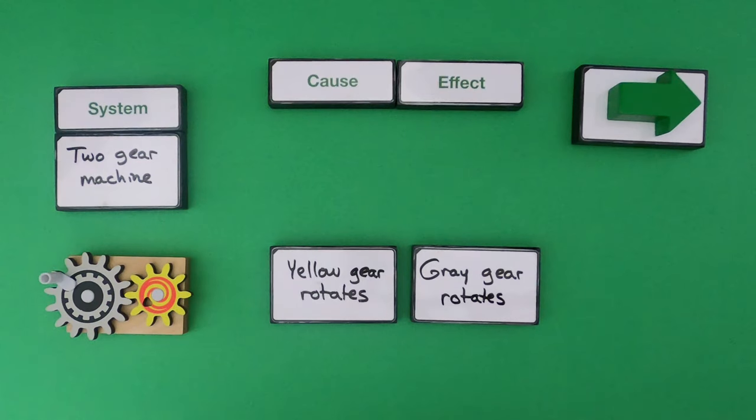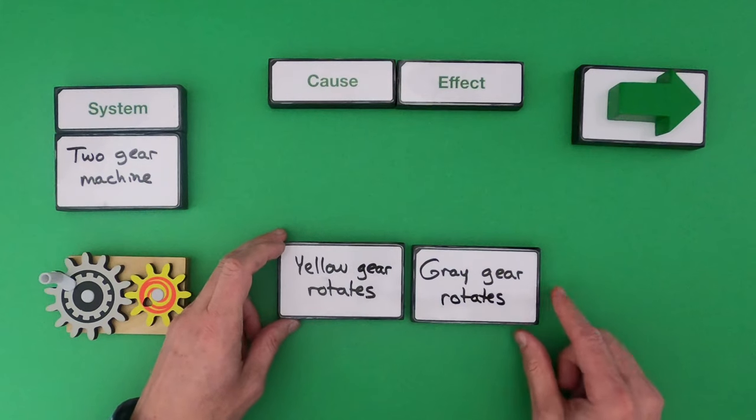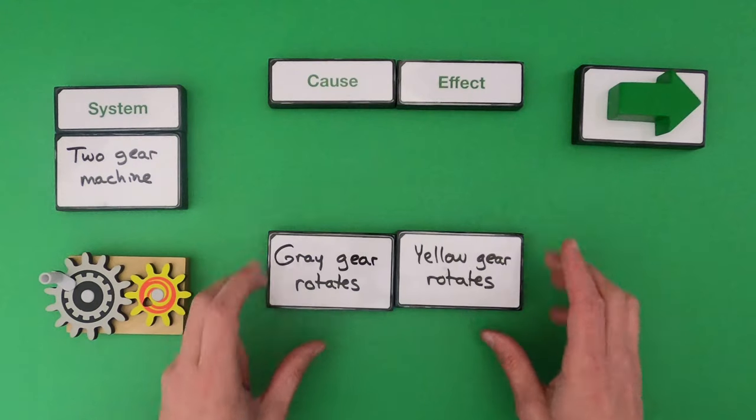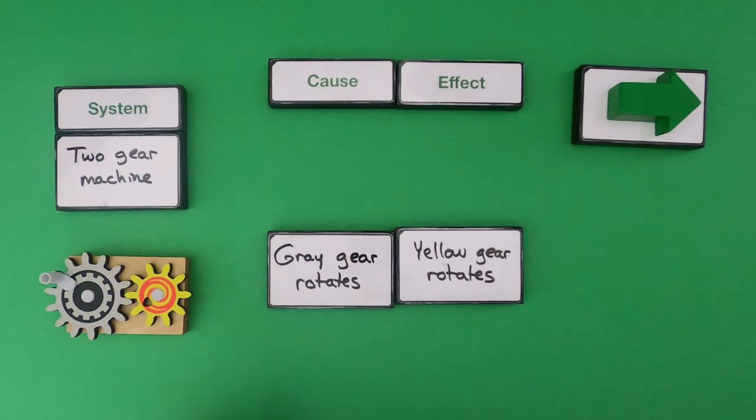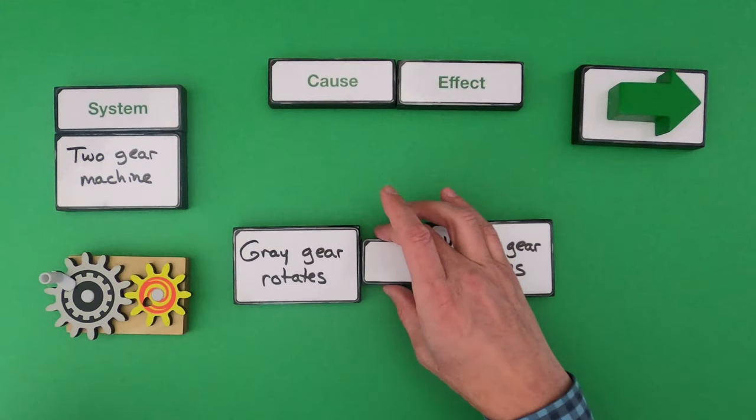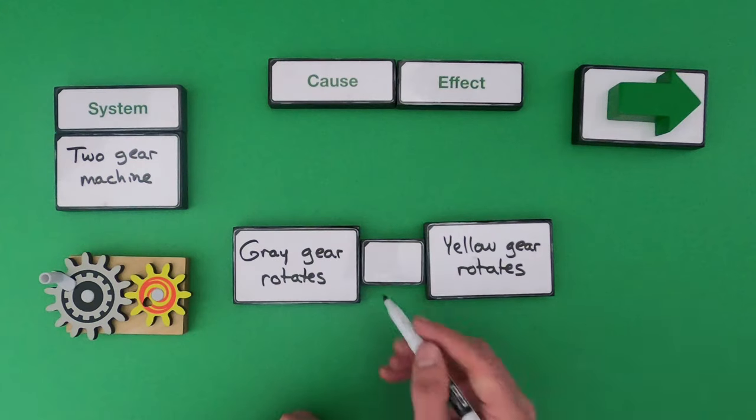And now we have to figure out what's the cause and what's the effect. In other words, what's the relationship between these two events? Does the yellow gear rotate and that causes the gray gear to rotate? Or does the gray gear rotate and that causes the yellow gear to rotate? That makes more sense to my brain. And so I'm going to put a relationship block between the two and this is where I'm going to put that arrow.